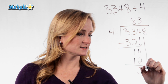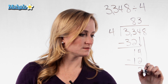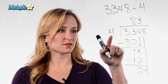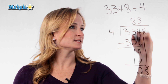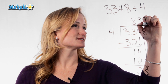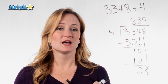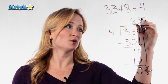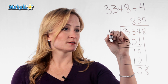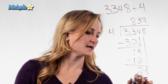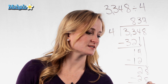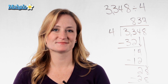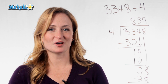Bring down this 8. So now we're thinking 4 goes into 28 seven times. And you can see if you have any remainders when you multiply. 7 times 4 is 28. And if we subtracted, we have nothing left over. And that's how you do long division.